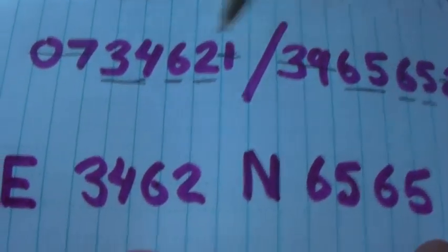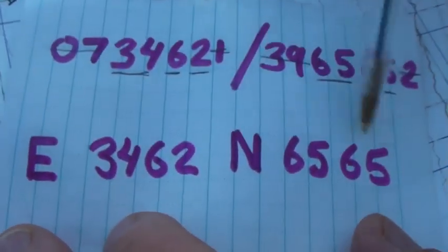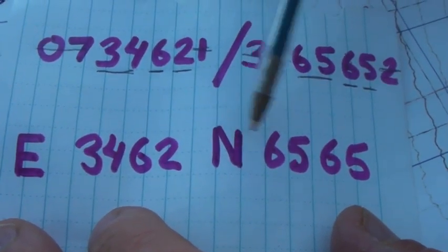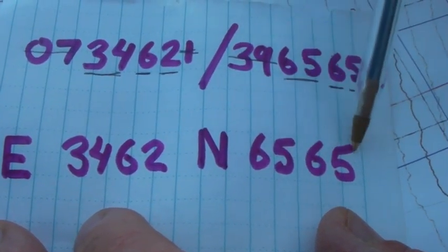I'll rewrite the coordinate like this. East, 34, 62. North, 65, 65.